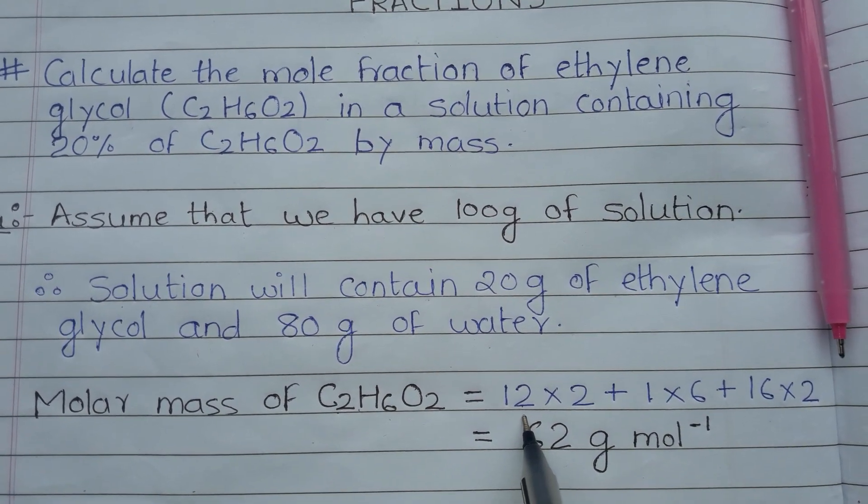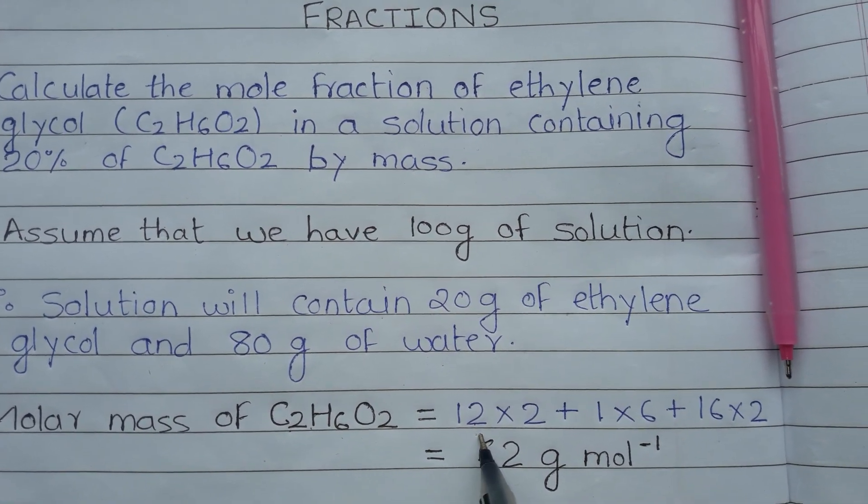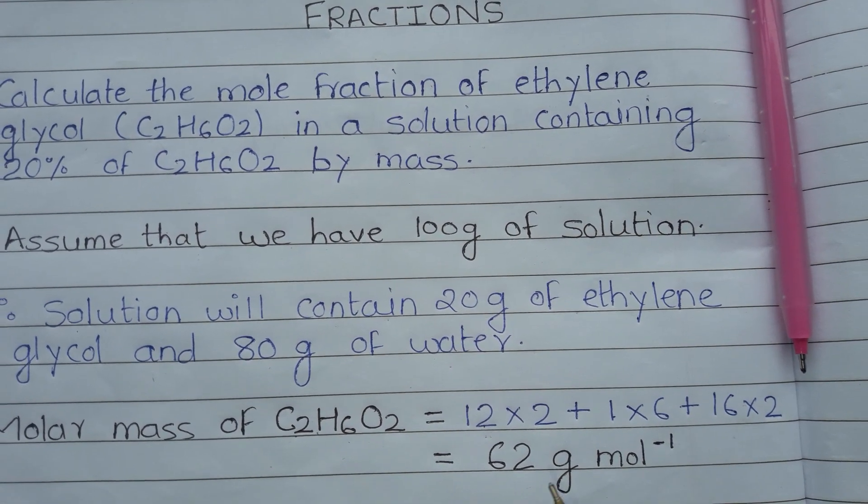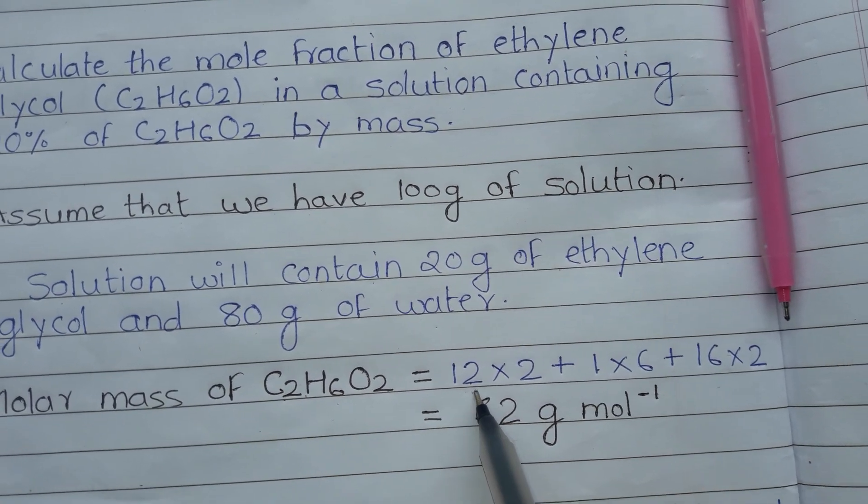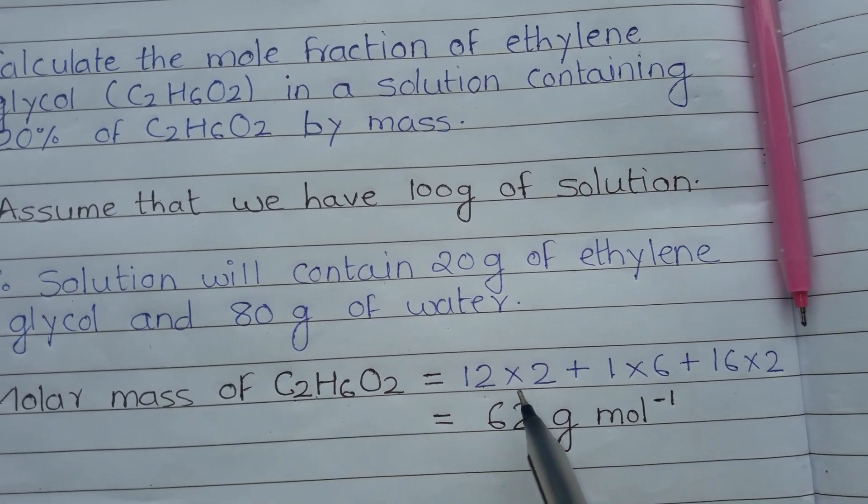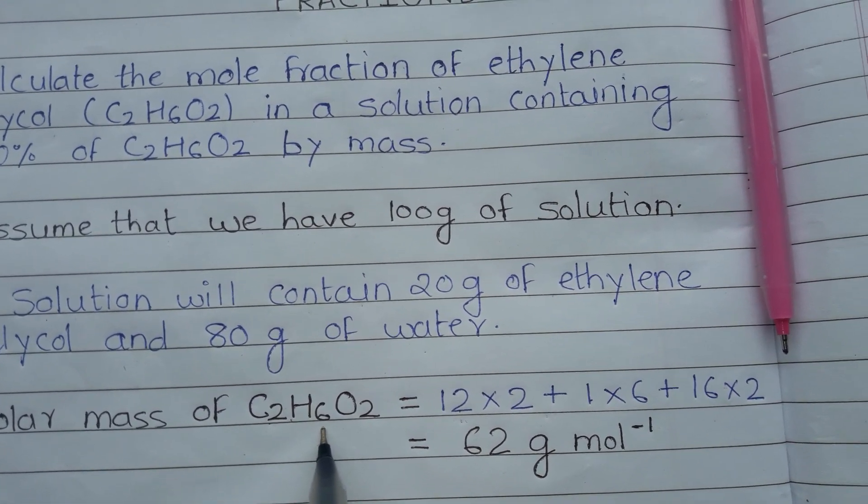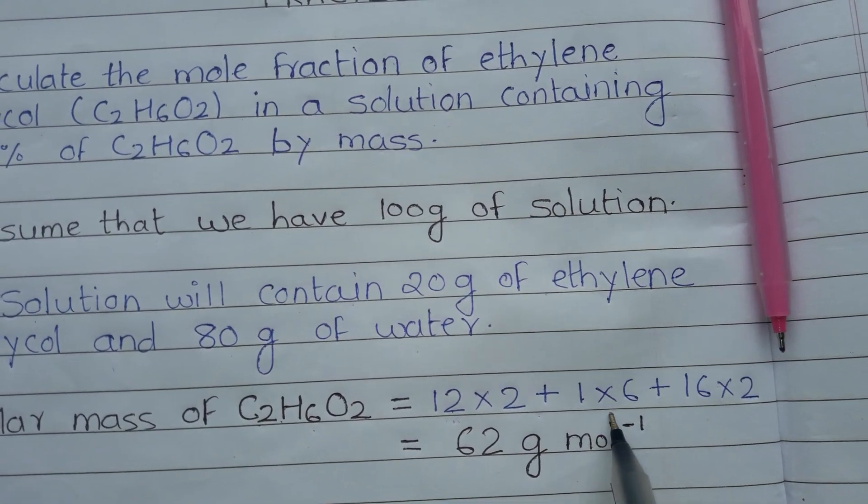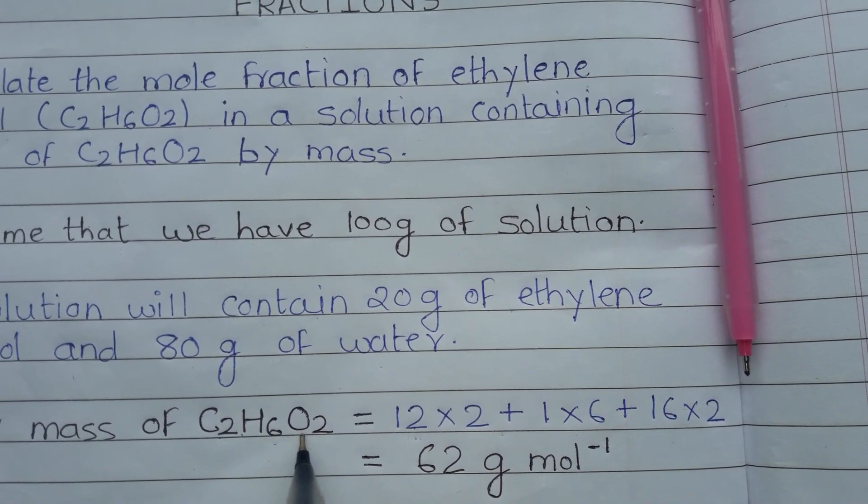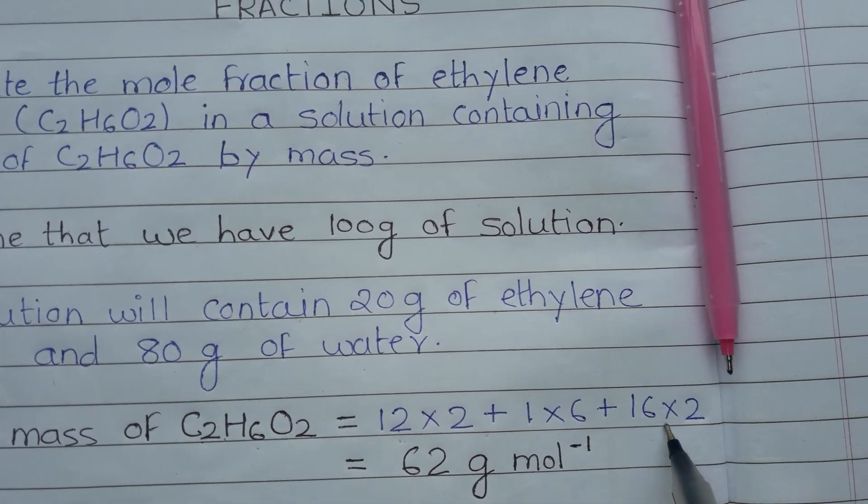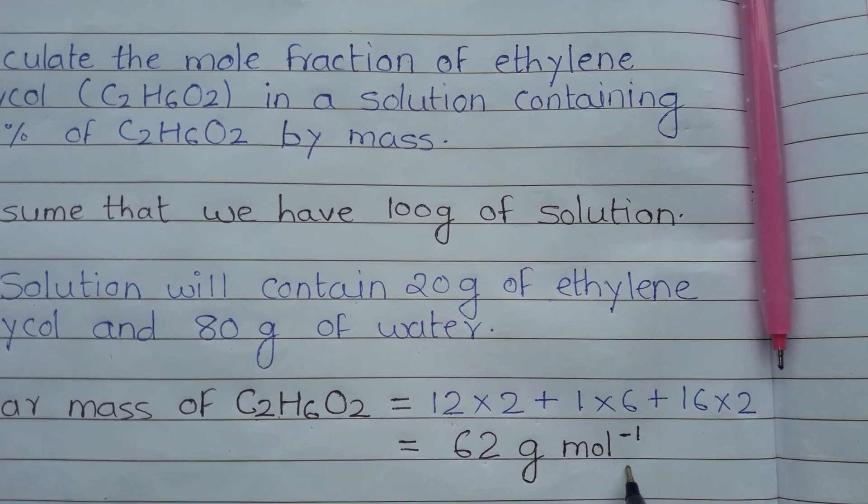We know that carbon's atomic mass is 12. Since we have 2 carbons, we need 12 times 2, plus 6 hydrogen. Hydrogen's atomic mass is 1, so 1 times 6, plus oxygen's atomic mass is 16. Since we have 2 oxygen, 16 times 2. So the molar mass of ethylene glycol is 62 g/mol.